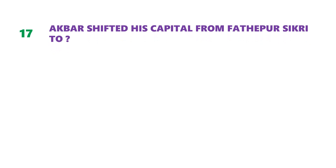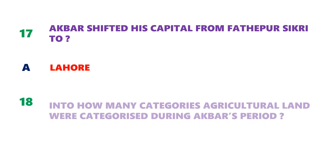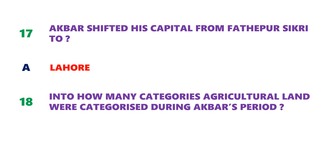Question number 17: Akbar shifted his capital from Fatehpur Sikri to Lahore. Next question: into how many categories were agricultural lands categorized during Akbar's period?